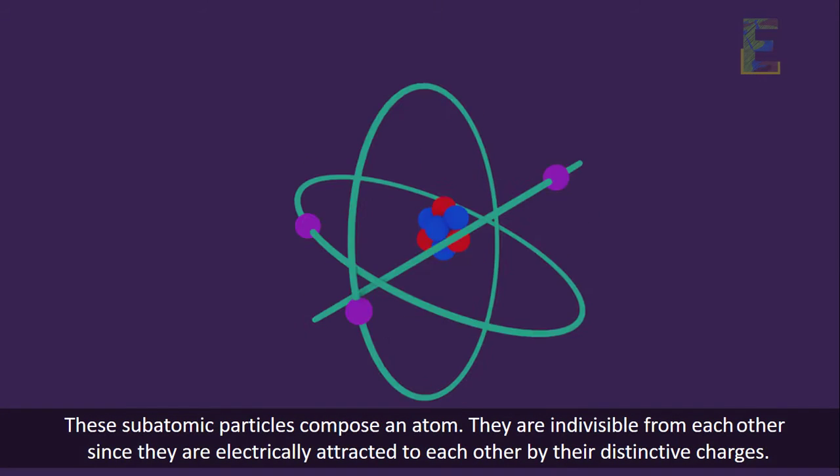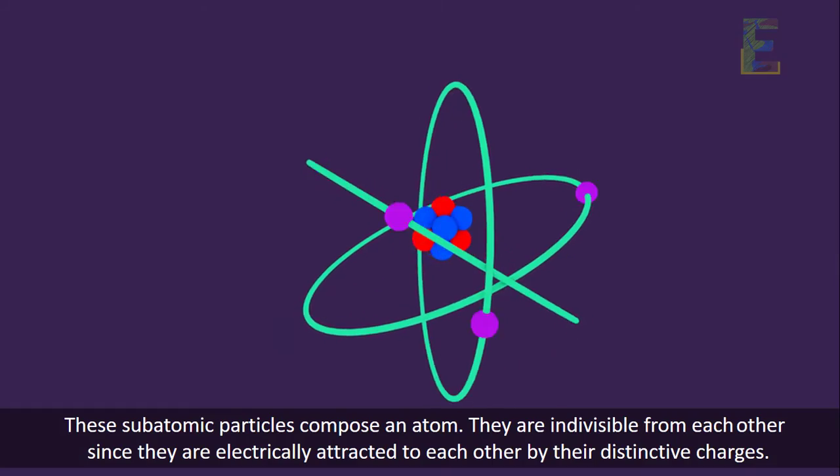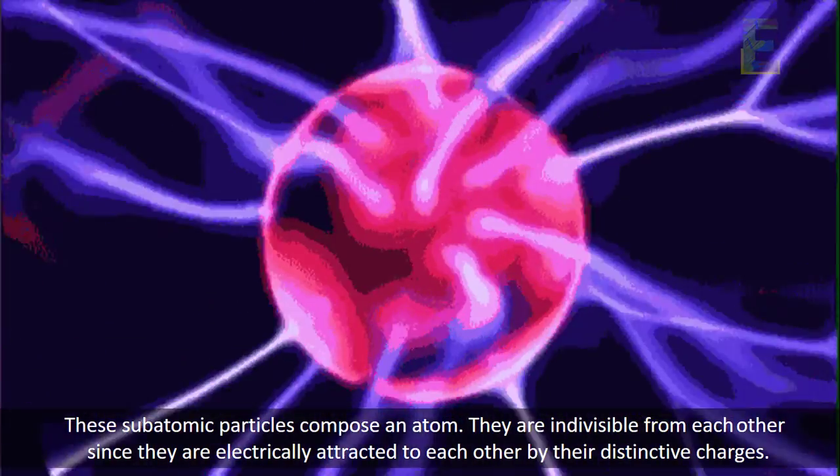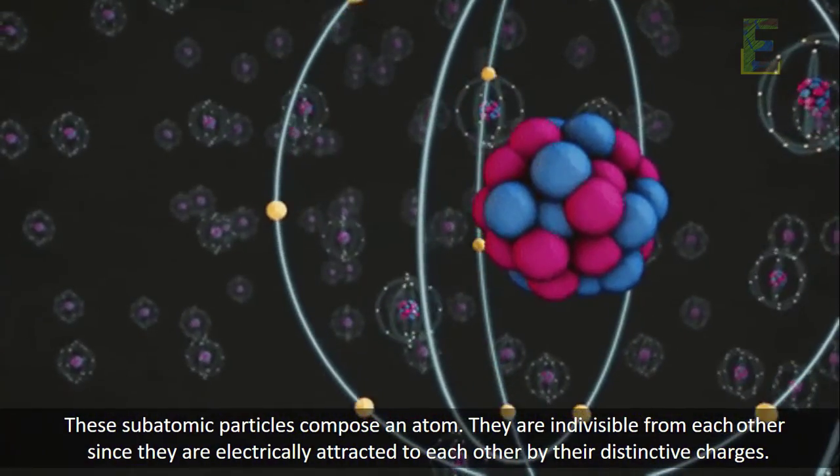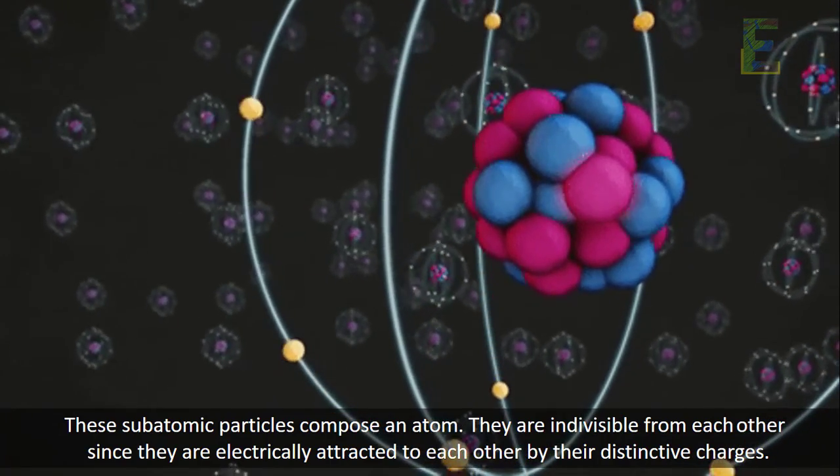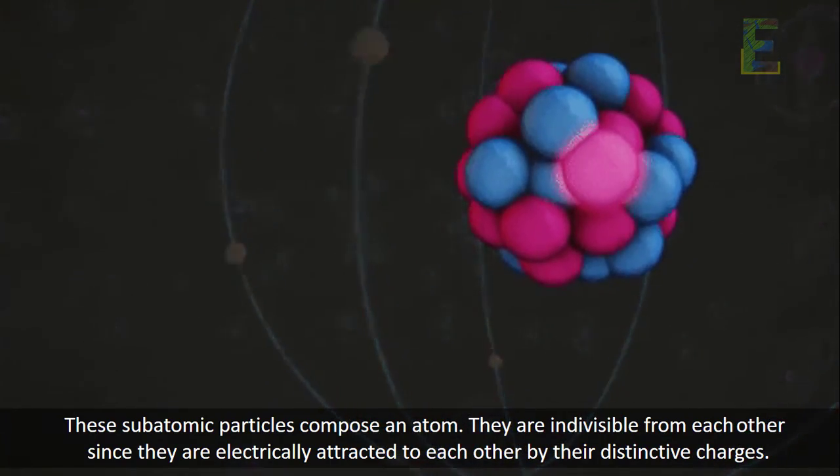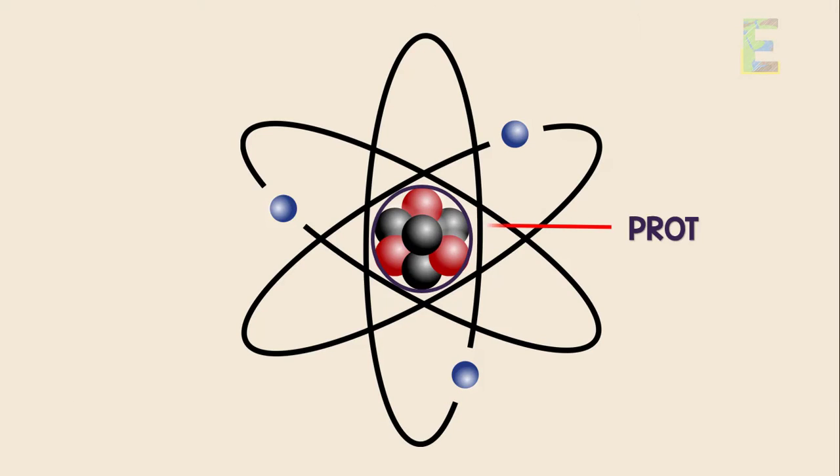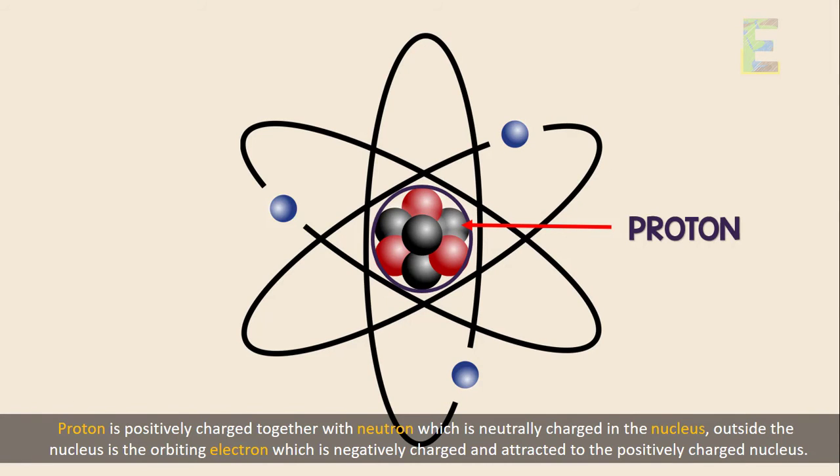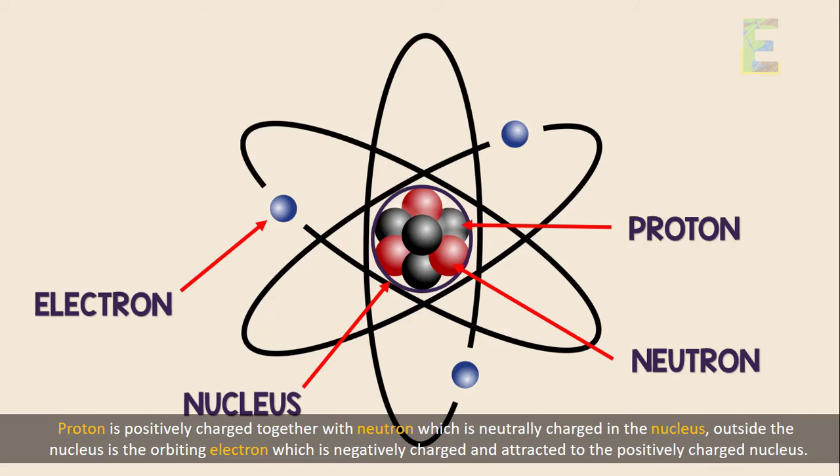These subatomic particles compose an atom. They are indivisible from each other since they are electrically attracted to each other by their distinctive charges. Proton is positively charged together with neutron, which is neutrally charged in the nucleus. Outside the nucleus is the orbiting electron, which is negatively charged and attracted to the positively charged nucleus.